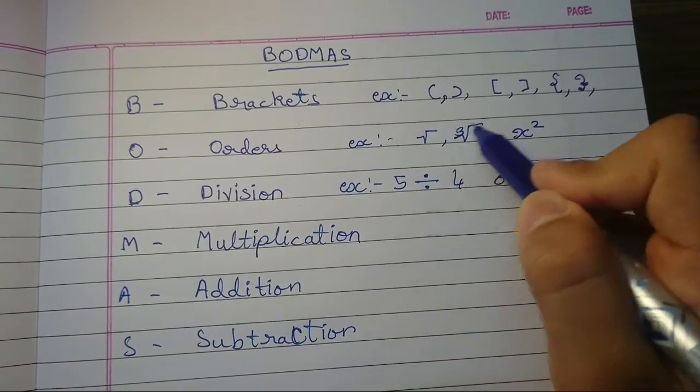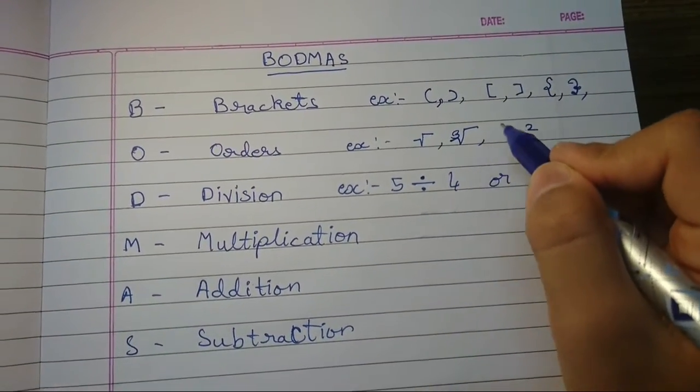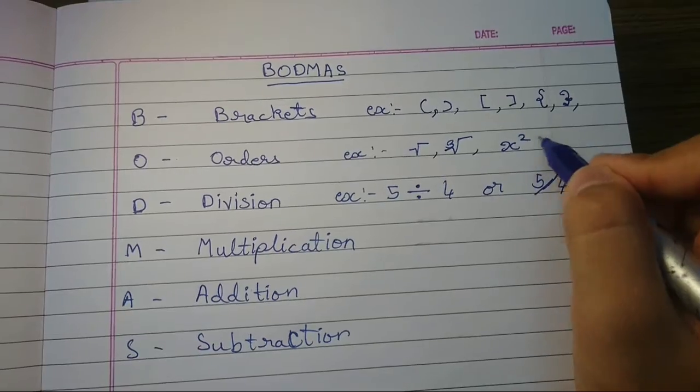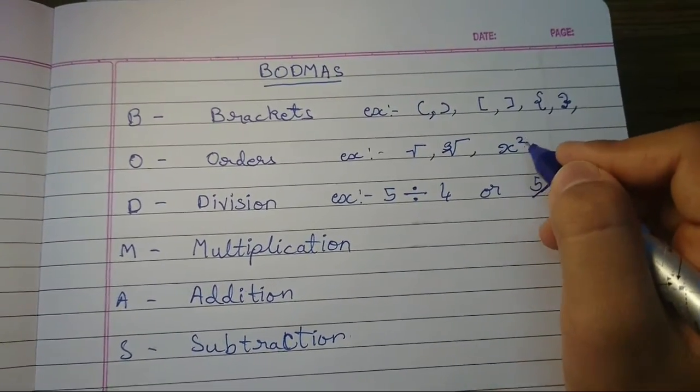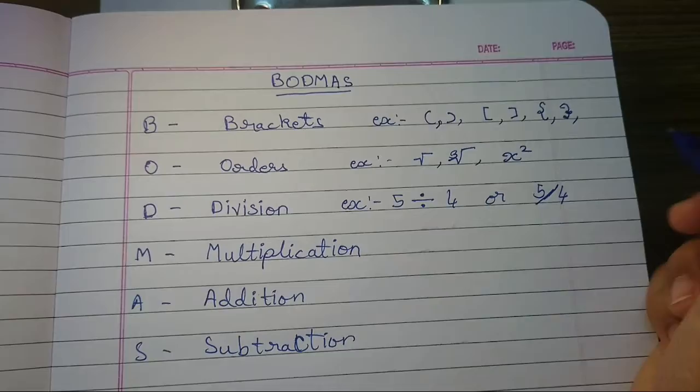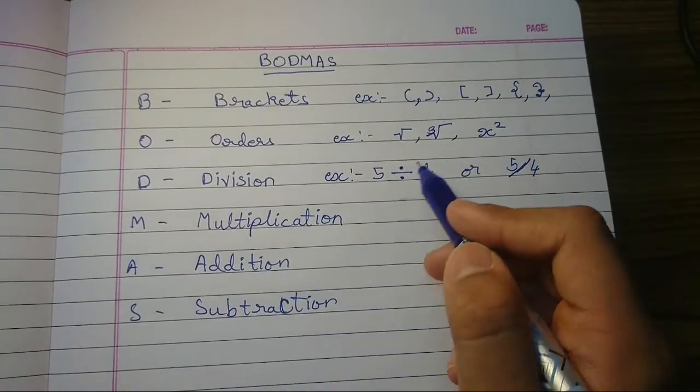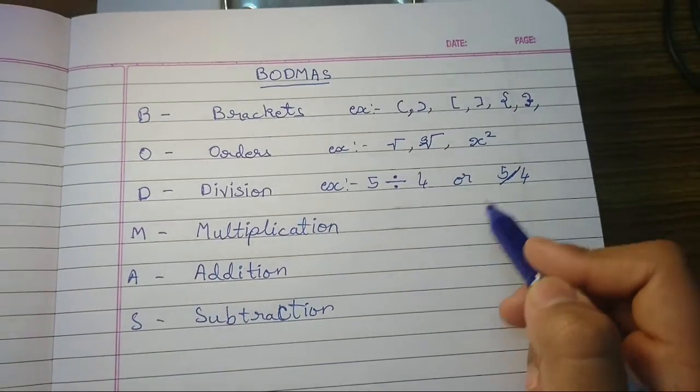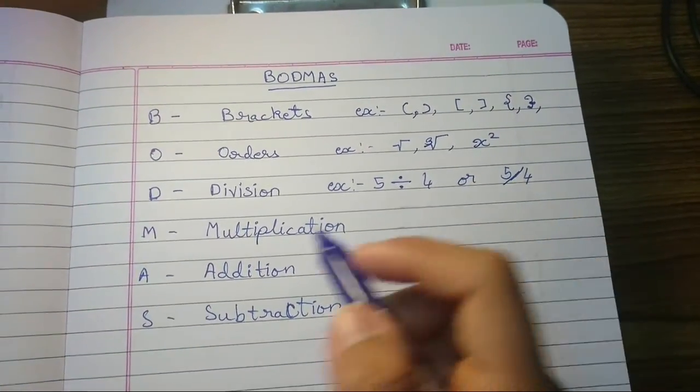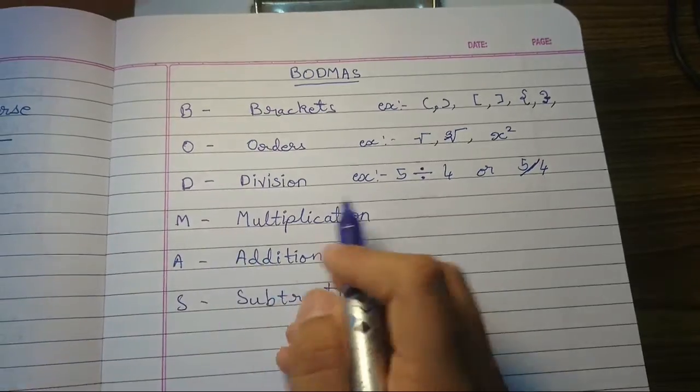Exponents and base. So this is the base and exponent. Exponent is also one of the orders. Division, as you know, the division symbol - it can be like this or the bar, slash bar. So that's the division.